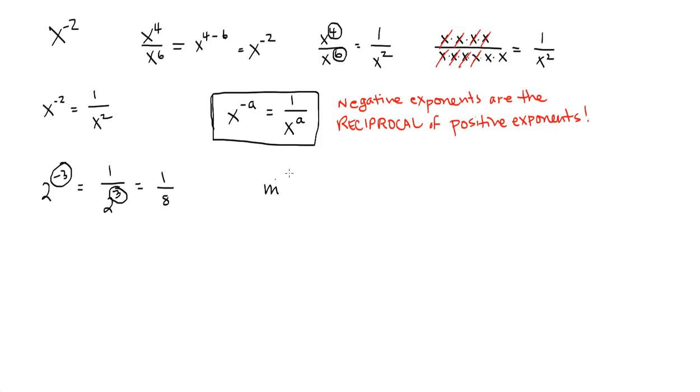m to the negative ninth is 1 over m to the ninth.